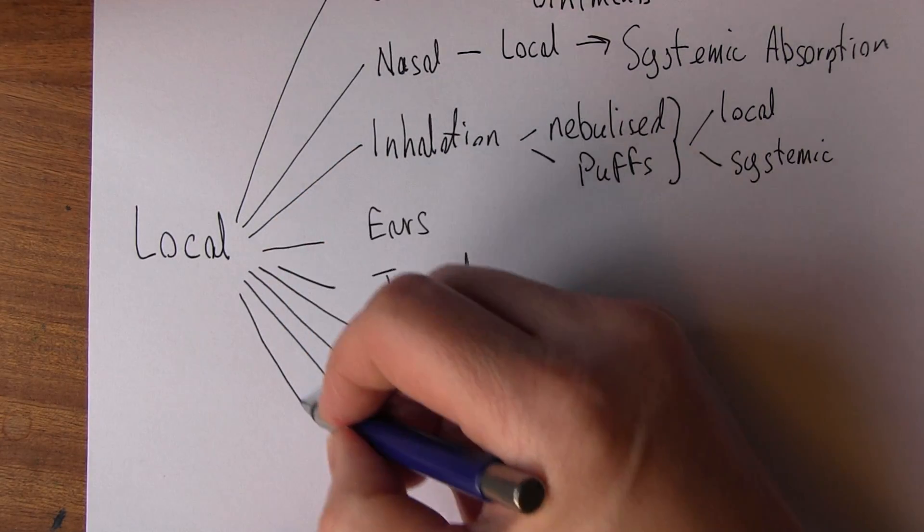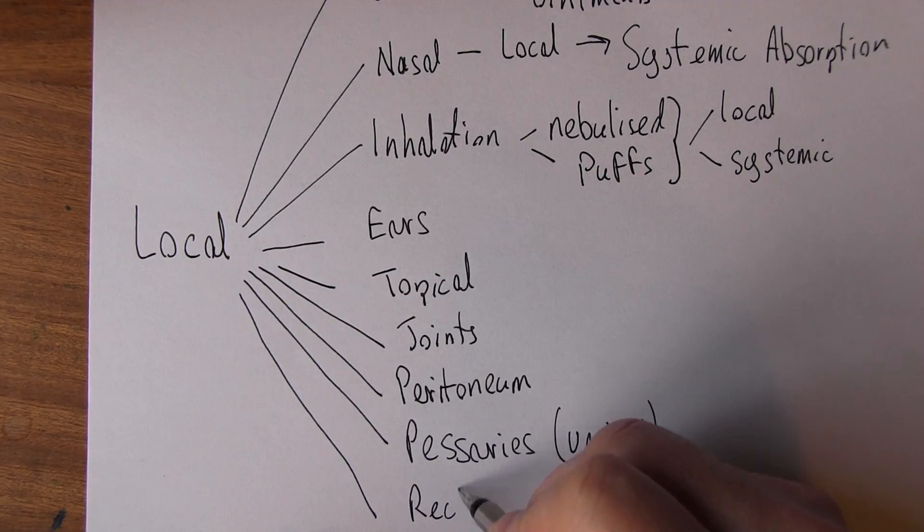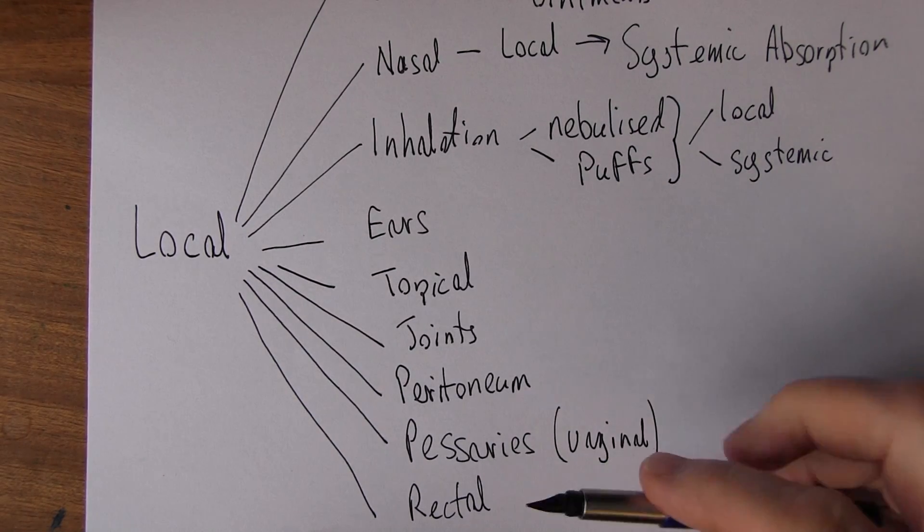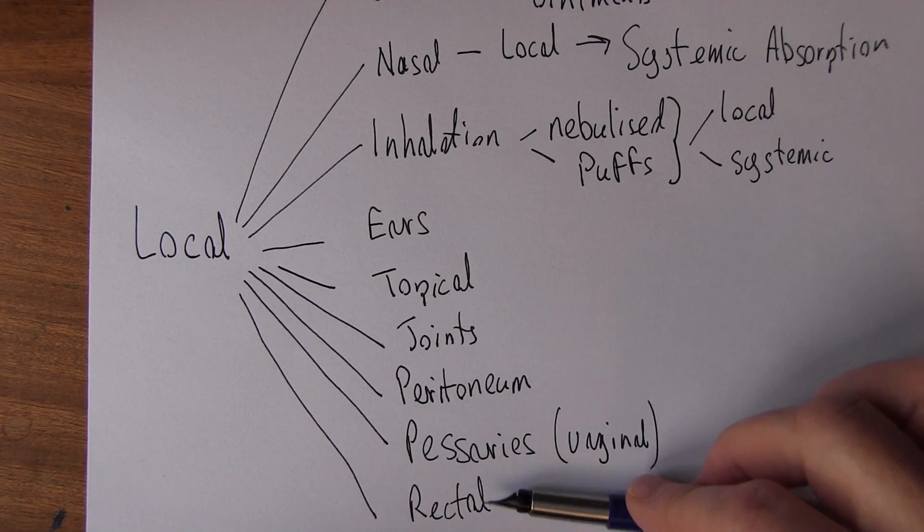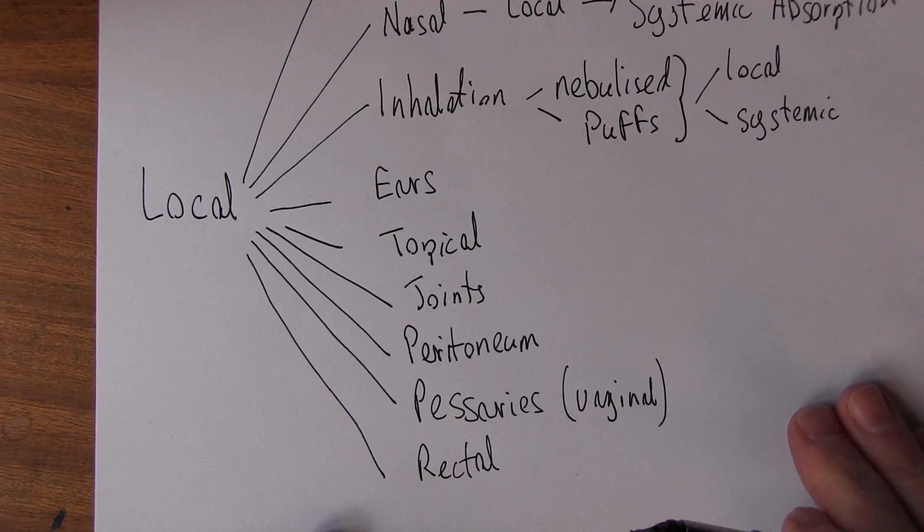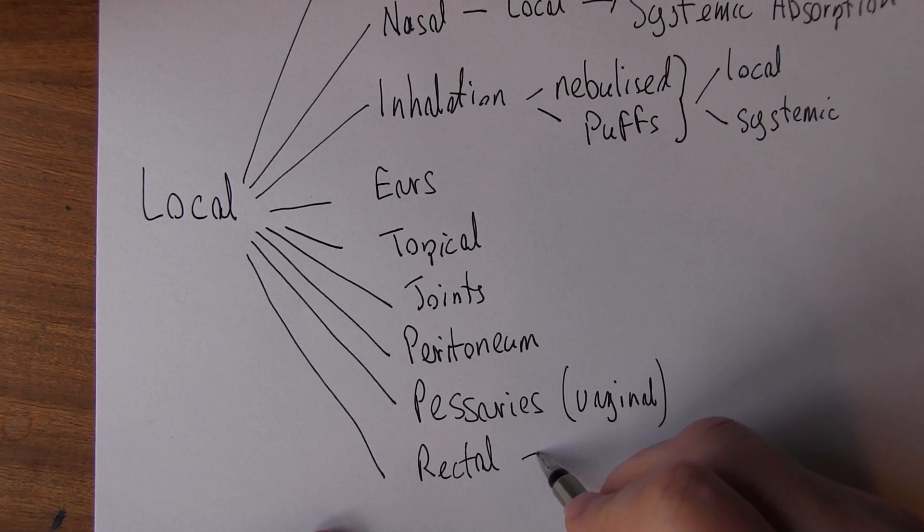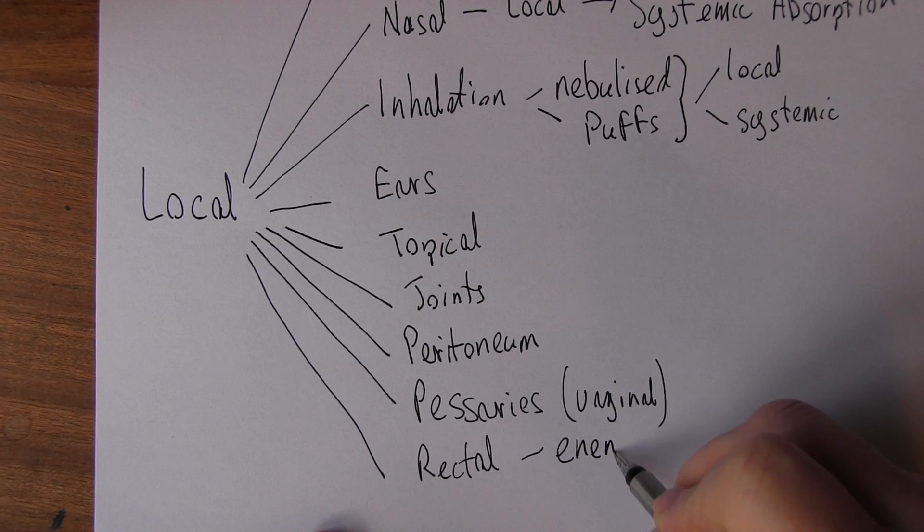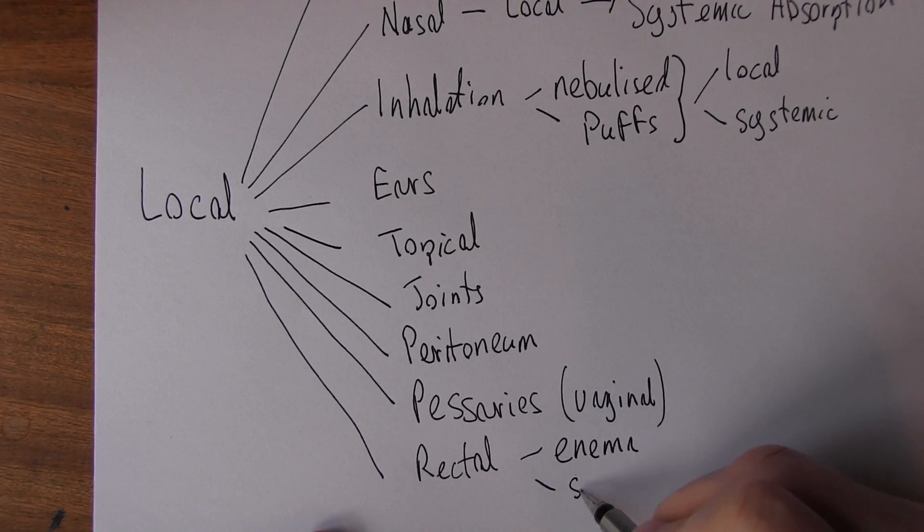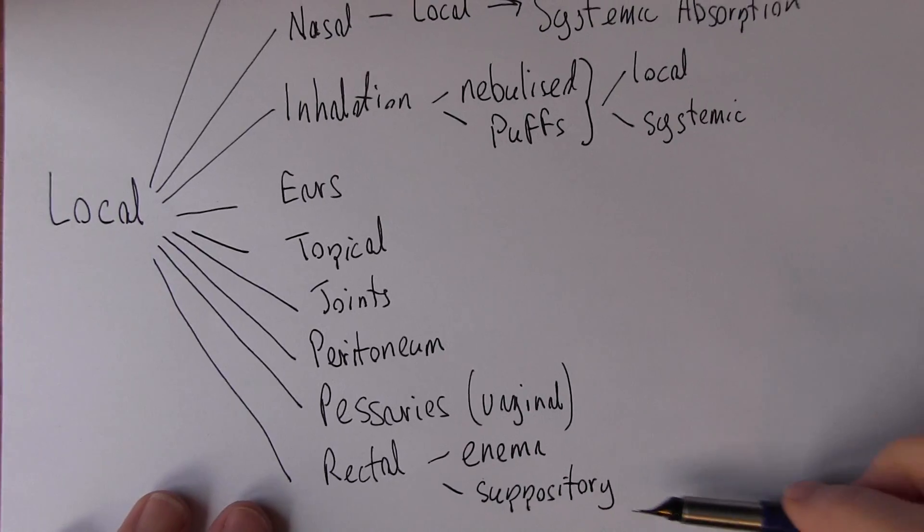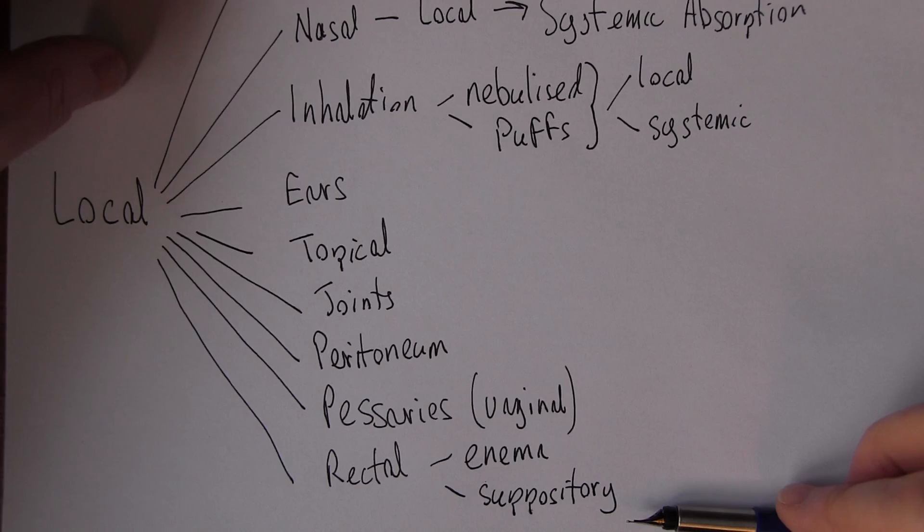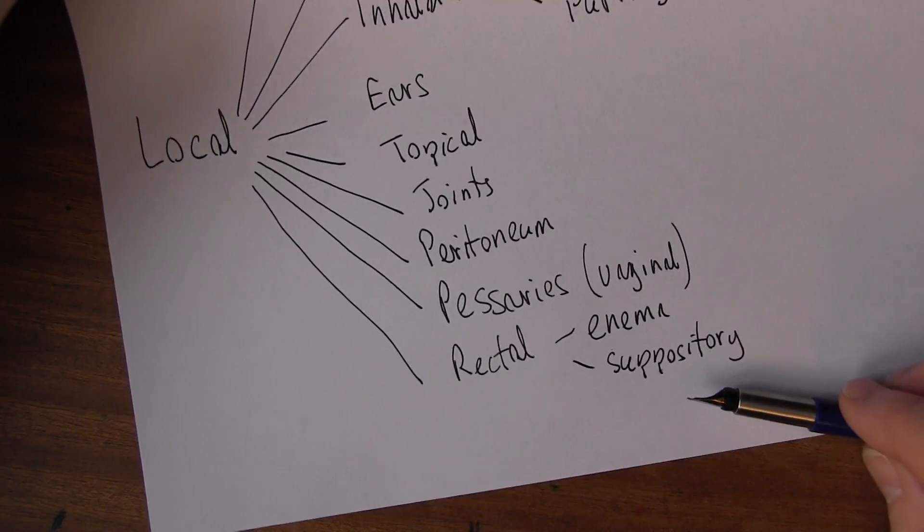Another possibility is rectal. Now we did talk about PR drugs when we were talking about systemic absorption, but other things we give specifically for their local effect. For example, we might give an enema or suppositories. We might give a suppository to stimulate bowel activity and facilitate defecation if there's constipation.